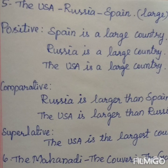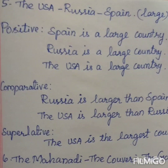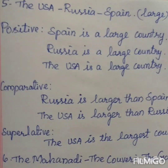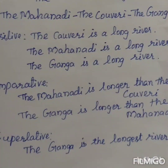Next: the USA, Russia, Spain — adjective is 'large'. For positive degree: Spain is a large country, Russia is a large country, or USA is a large country. For comparative degree: Russia is larger than Spain; the USA is larger than Russia. For superlative degree, only one sentence: the USA is the largest country.